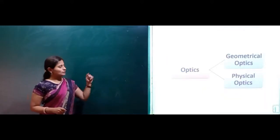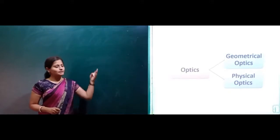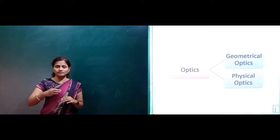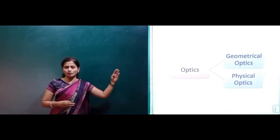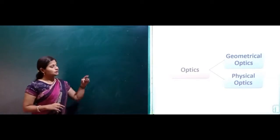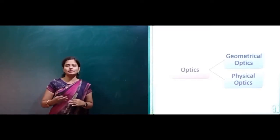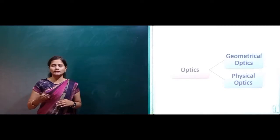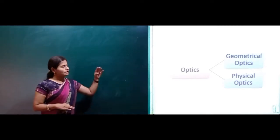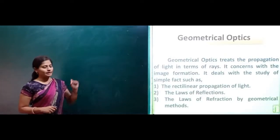Optics can be divided into two parts: geometrical optics and physical optics. For your third semester you have geometrical optics related content in the syllabus. Physical optics you will study in your coming fourth semester. For your third semester only, you have geometrical optics.